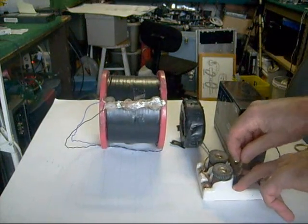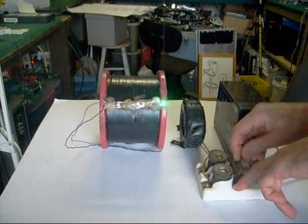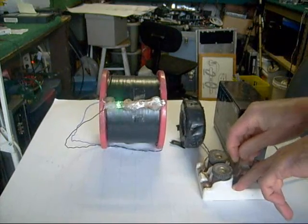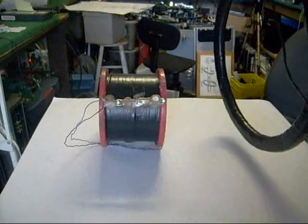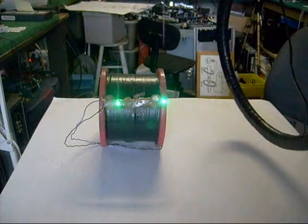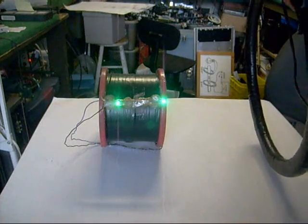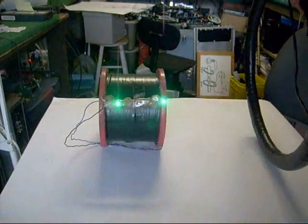And actually, if I could do it fast enough, they would have both appeared to be lit. Now here you'll notice when I take this other coil and put it near my secondary coil, both lights appear to be lit up.